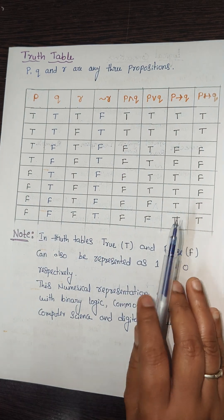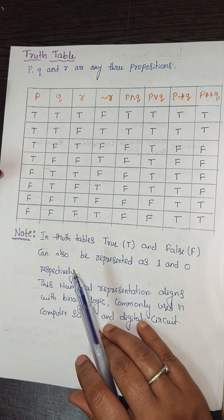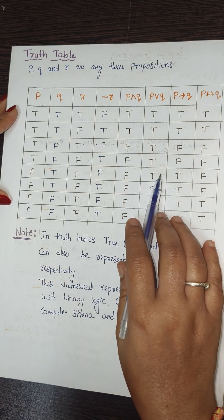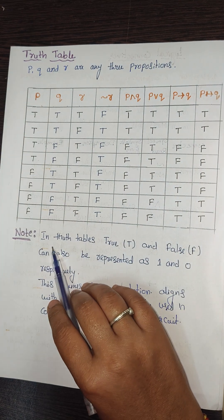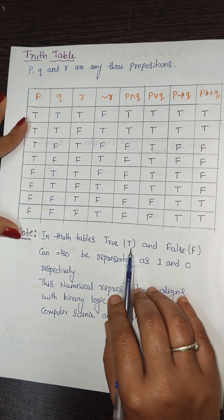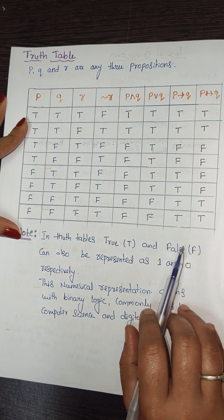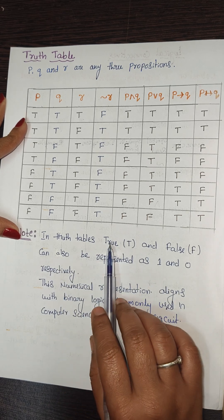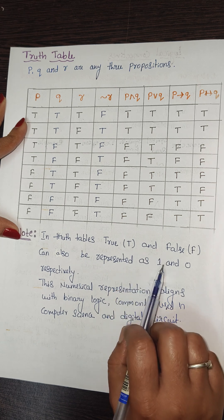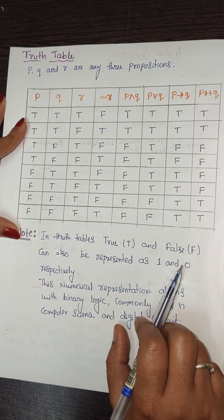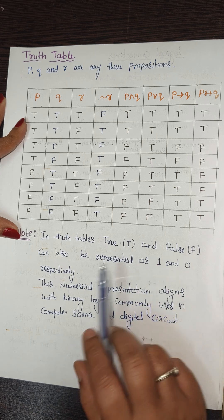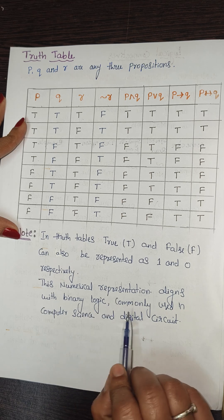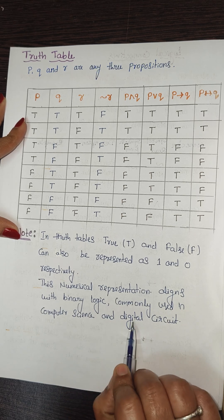Practice the truth table yourself with two or three questions. Note that in a truth table, T and F can also be represented as 1 and 0 respectively. This numerical representation aligns with binary logic and is commonly used in computer science and digital circuits.